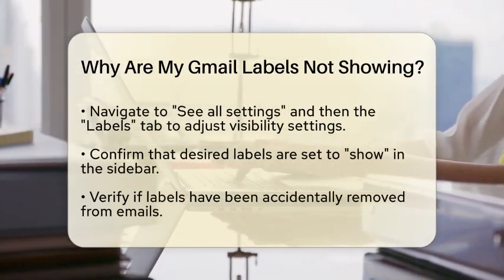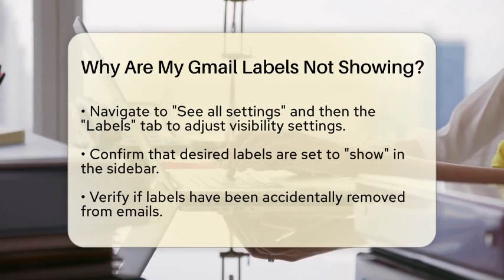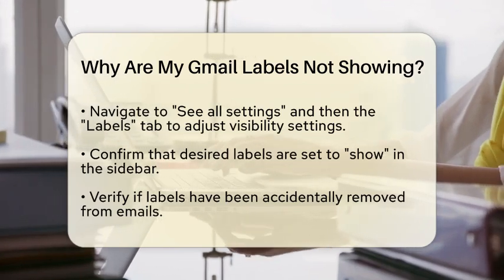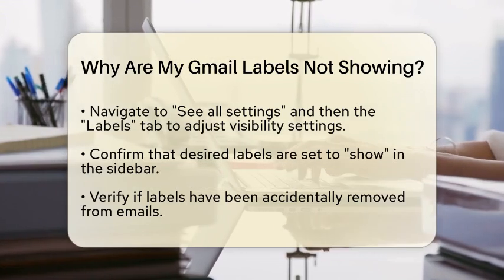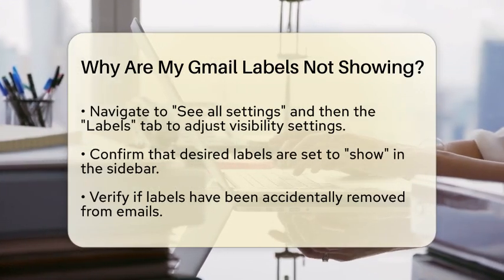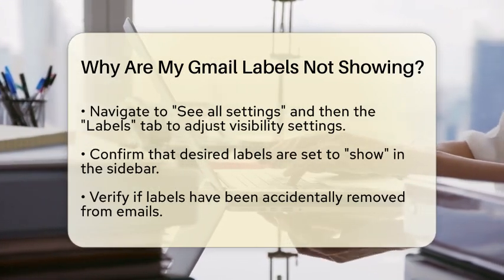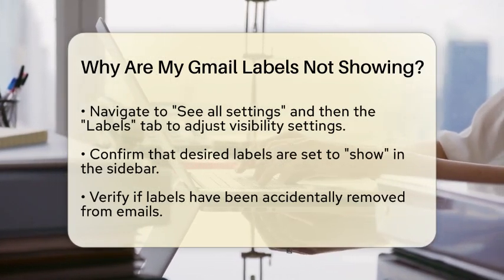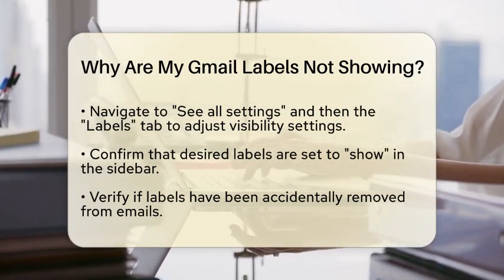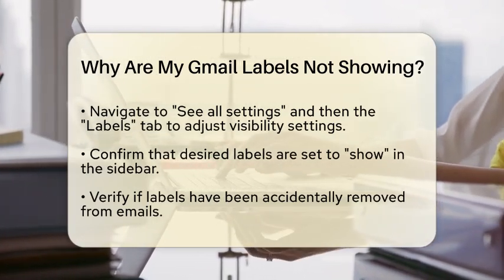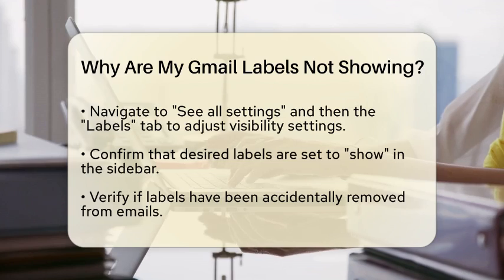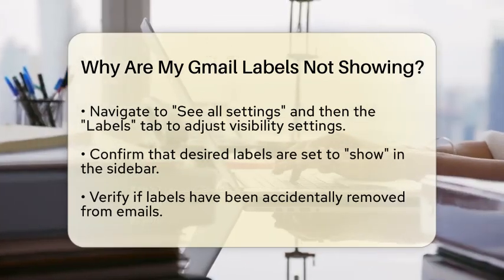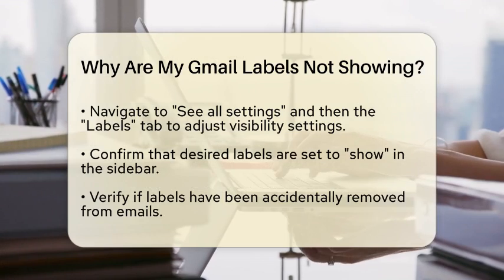Next, it is important to ensure that your labels are not hidden. Gmail allows users to customize which labels are displayed in the sidebar. To check this, go to the settings gear icon, select See All Settings, and then navigate to the Labels tab. Here, you can see all your labels and their visibility settings. Make sure that the labels you want to see are set to show in the sidebar.